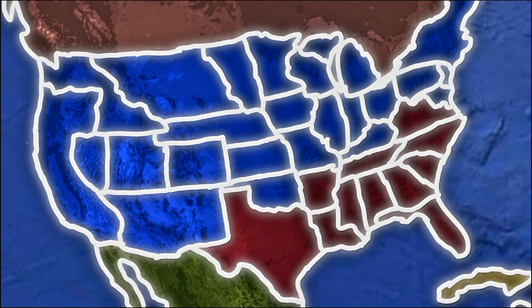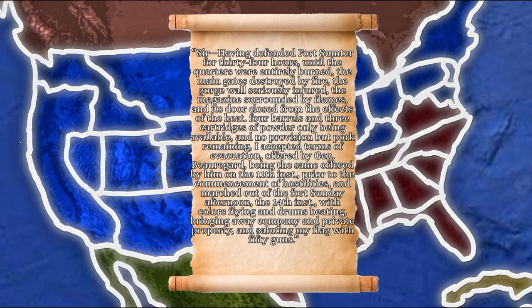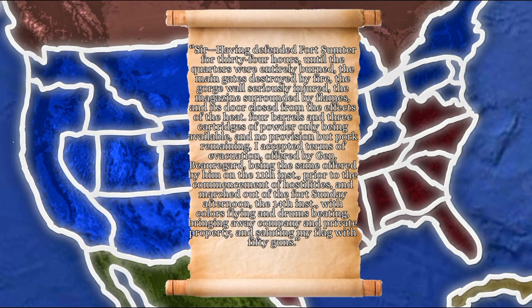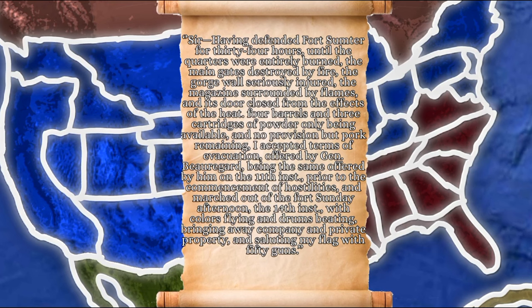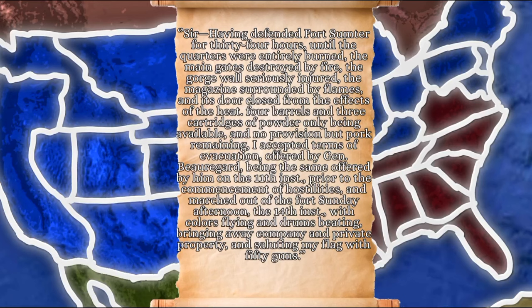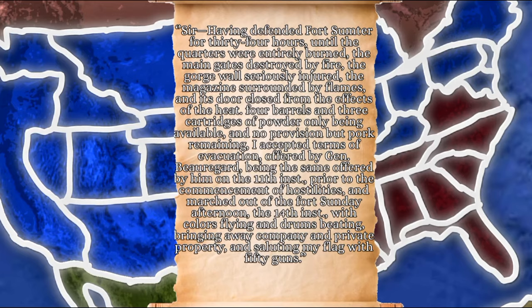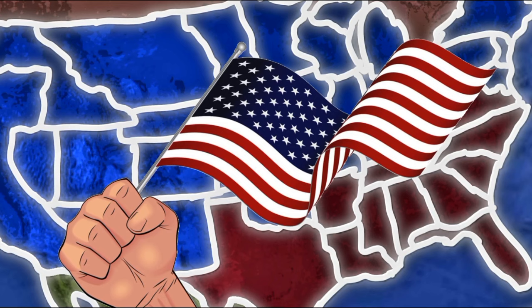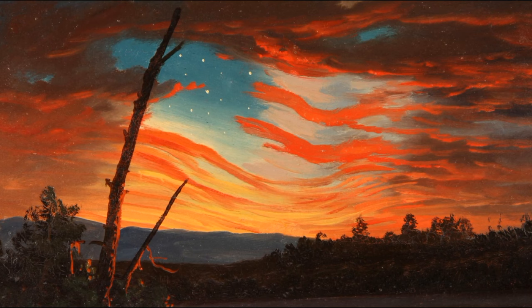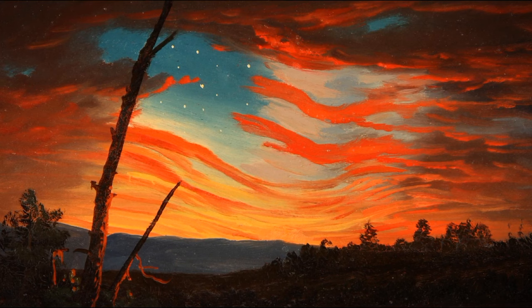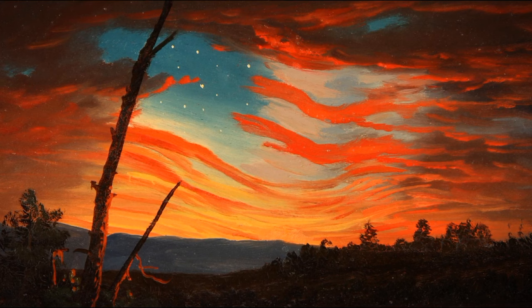Robert Anderson wrote in his official report: 'Having defended Fort Sumter for 34 hours until the quarters were entirely burned, the main gates destroyed by fire, the gorge wall seriously injured, the magazine surrounded by flames and its door closed from the effects of heat, with four barrels and three cartridges of powder only available and no provision but pork remaining, I accepted terms of evacuation offered by General Beauregard and marched out of the fort with colors flying and drums beating.' Anderson carried the fort's flag north, where it became a rallying symbol for Union supporters, inspiring Frederick Edwin Church to paint a celebrated work in its honor.